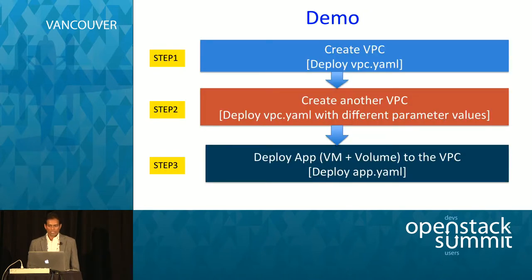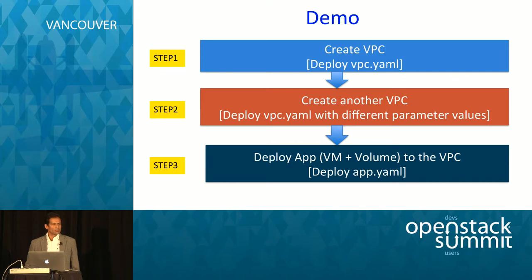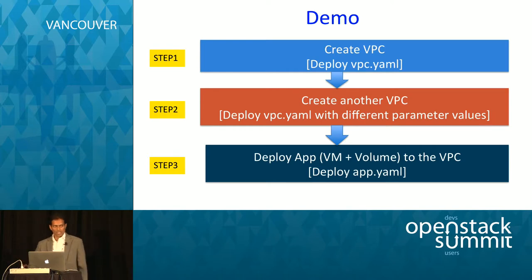Now we will go to the demo. In the first step, we will create a virtual private cloud by deploying the VPC.YAML template. In the second step, we will show the repeatability by creating another virtual private cloud by deploying VPC.YAML again — the same template with different parameter values to create a unique flavor for the virtual private cloud. Step three is we will deploy the app to the virtual private cloud and attach it to one of the networks. I will now switch back to my demo environment.